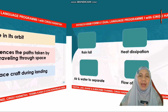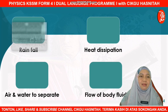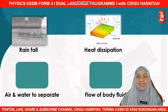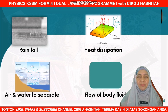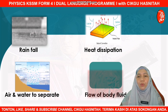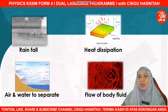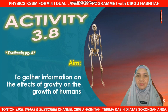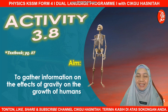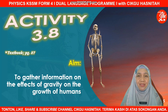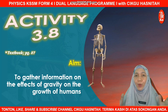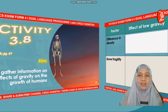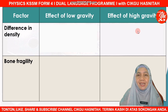What will be the effect of gravity in nature? Gravity causes rain to fall, it causes a dissipation of heat, it separates air and water, and it affects the flow of body fluids — whether we are in a low gravity area or a high gravity area. Now, our third and final activity is to gather information on the effects of gravity on human growth. If you are ready, let us check this table.